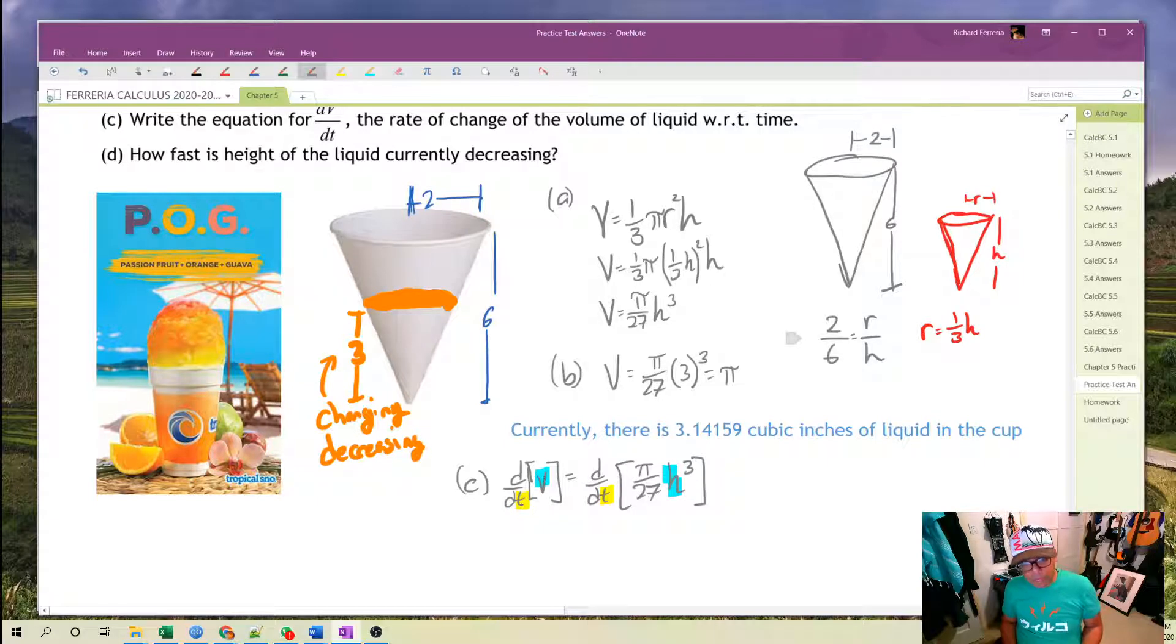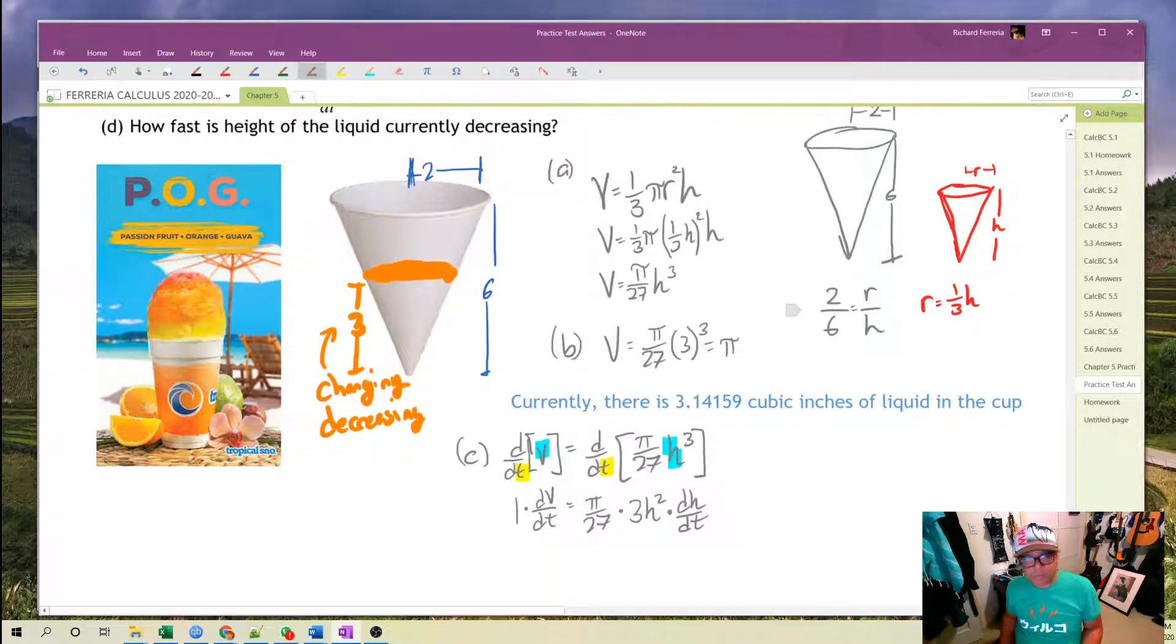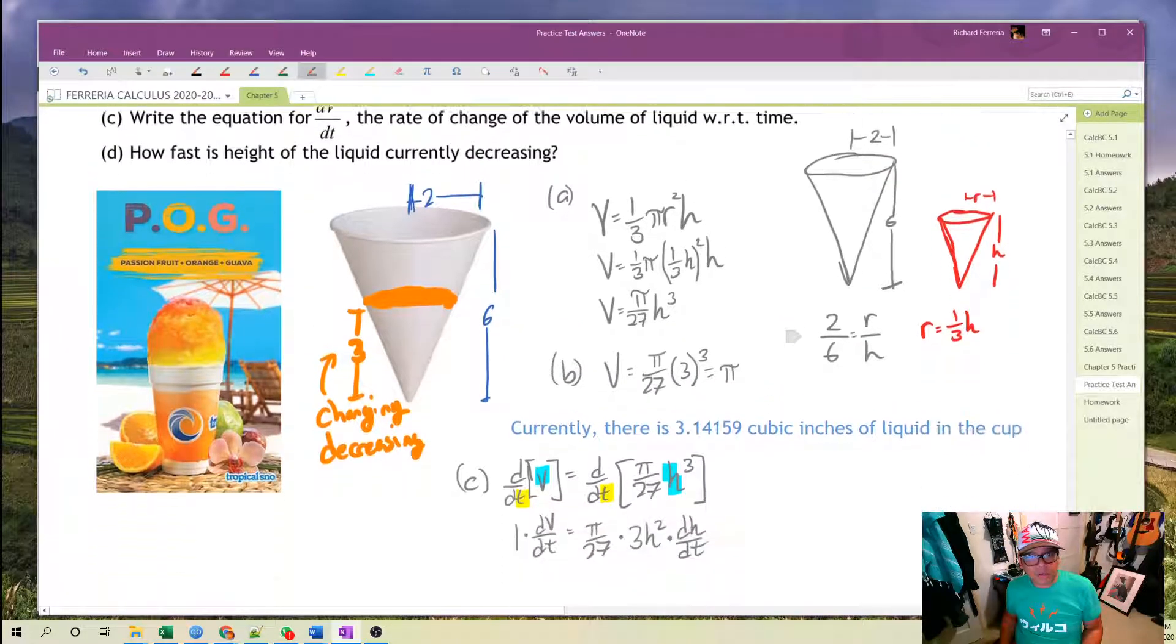So let's see. The derivative of V with respect to t, pi over 27 is constant and the derivative of h cubed with respect to t is the derivative of h cubed with respect to h, which is 3h squared, multiplied by dh/dt. That's our chain rule. Is there anything else here? No, that's it.